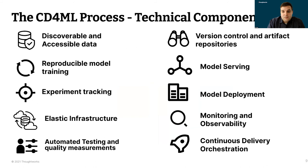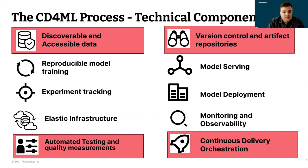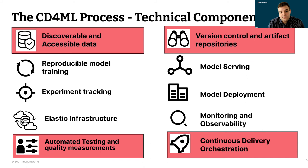When we do a CD4ML project, we want to touch all of the technical areas. Things like reproducible model training, experiment tracking, elastic infrastructure, and model serving. One area that stands out is discoverable and accessible data. Having a catalog, registry, or centralized location where you can discover data and have it accessible throughout your organization is a key enabler, because it allows all teams to find the data they need for training.